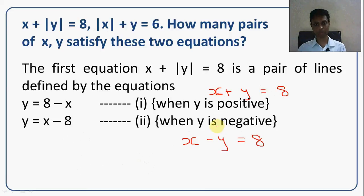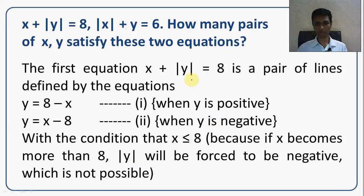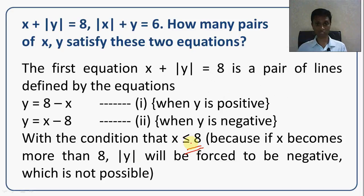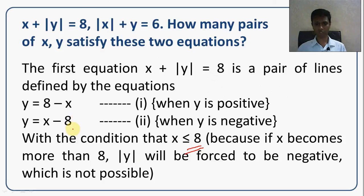Before moving on, note that in x plus mod y equals 8, modulus of y must be greater than or equal to 0. This means the equation is only defined when x is less than or equal to 8. If x is 9, then 9 plus mod y equals 8 is not feasible, since mod y is non-negative. So x plus mod y equals 8 gives y equals 8 minus x when y is positive, and y equals x minus 8 when y is negative, valid only when x is less than or equal to 8.